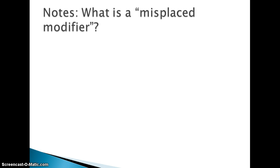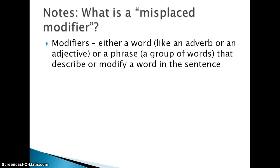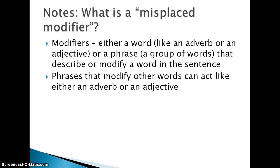So what is a misplaced modifier? Well, first you need to know what a modifier is. A modifier is either a word, like an adverb or an adjective, or it could be a phrase, which is a group of words. Either of these two things can be something that describes or modifies a word in the sentence. Now phrases that modify other words can act like either an adverb or an adjective.